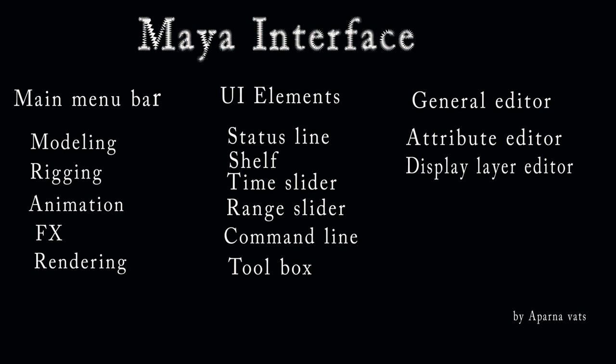The Maya interface includes: the main menu, status line, shelf, toolbox, time slider, layer editor, channel box, help line, command line, and range slider. Maya also has six orthographic views — front, back, top, bottom, left, and right — plus the default perspective view.